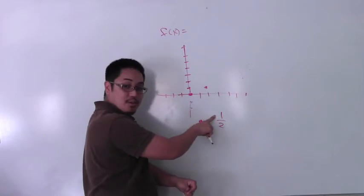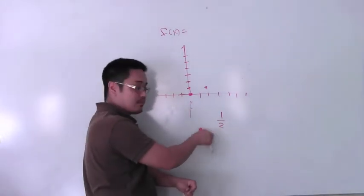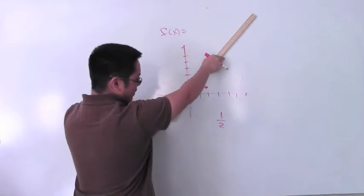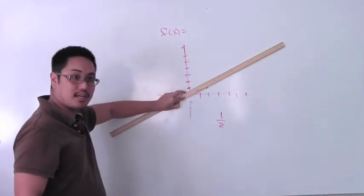1.5. The rise is 1, the run is 2, so see how this graph kind of looks more like this? It's got that more slant.